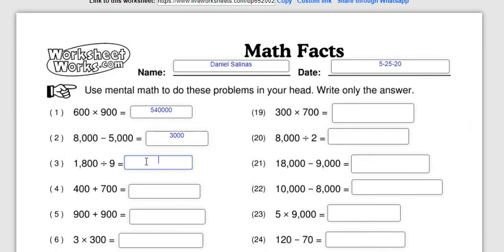9 divided by 18 is 2. Add the two zeros and you got 200. See, so it's really basic facts with extra zeros added on to it.